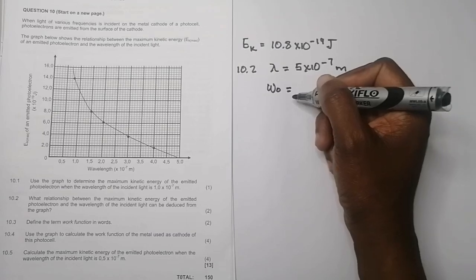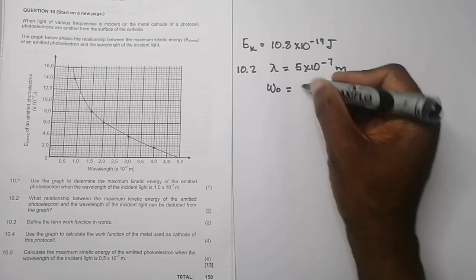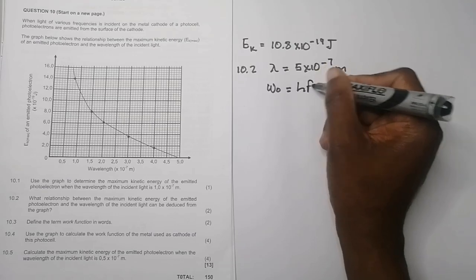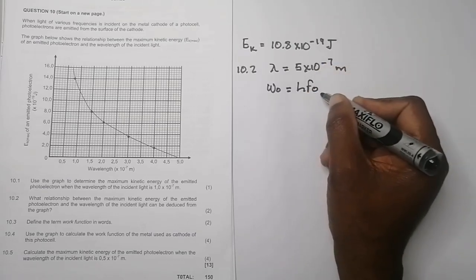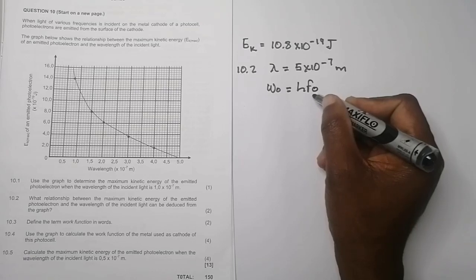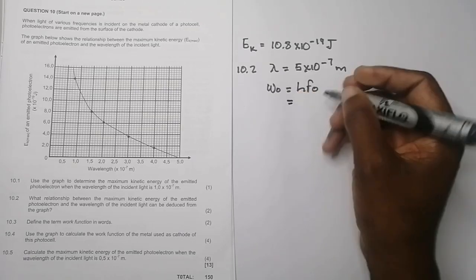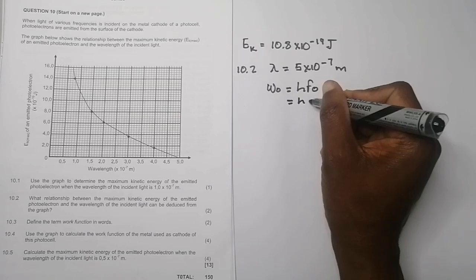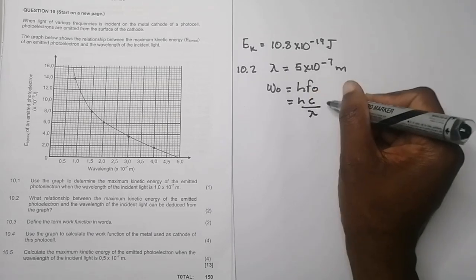So to get the work function, and for those of you who haven't watched our full video on photoelectric effect, I think it would really do you a world of good if you'd go back to that. So we know that the work function would be HF zero, the threshold frequency, but we're not given the threshold frequency in this case, but we are given the wavelength. So we're going to say C divided by lambda.